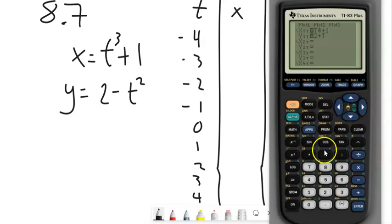And then hit your y equals. And I'm going to say, let's see, this was t cubed plus 1. And remember when you're in this mode, you can get the t off of this button right here.